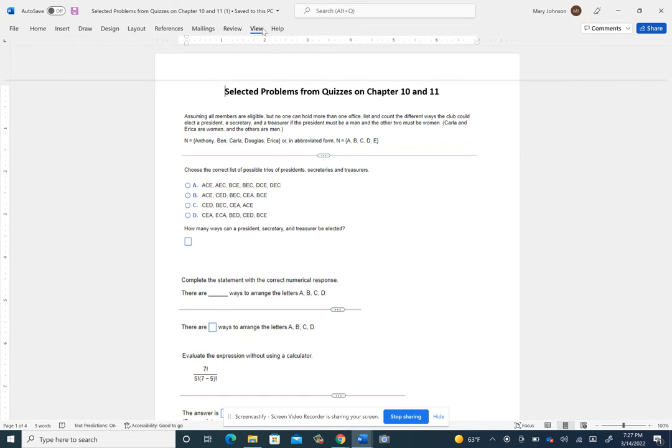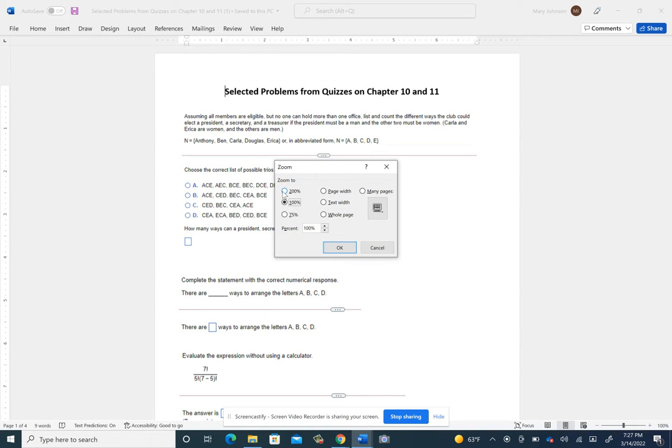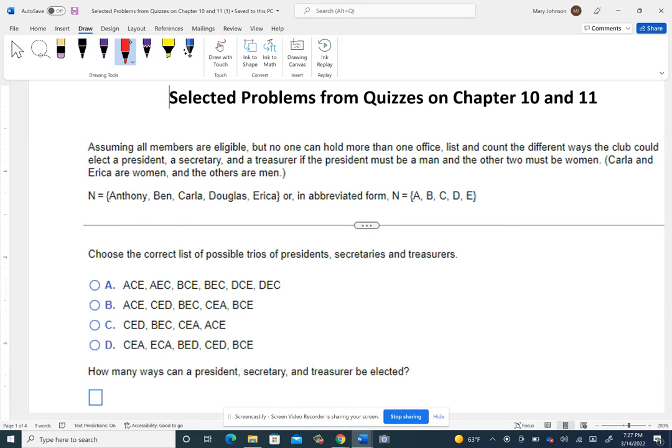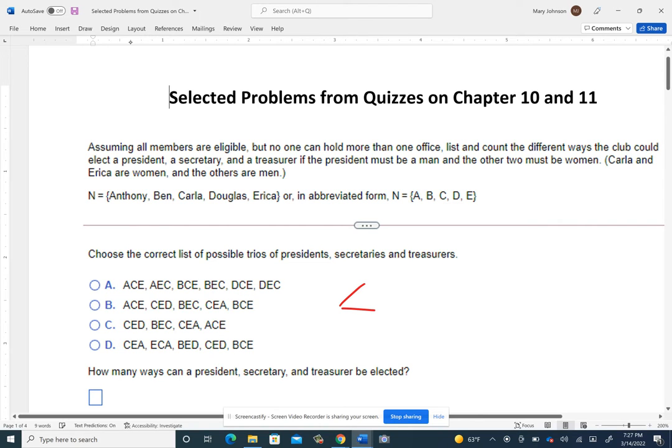Let me make it larger. This is another one where you could use a tree diagram. So I could select the president first, and it has to be a man, and that would be Anthony, Ben, or Douglas. Then I need a secretary and a treasurer, and it says they have to be women. So that means I only have the choice of Carla or Erica when I choose the secretary.